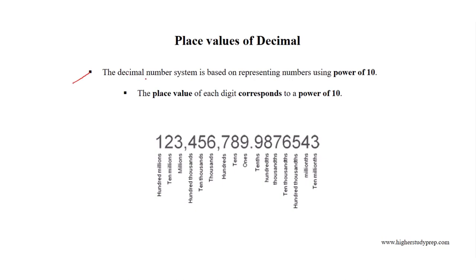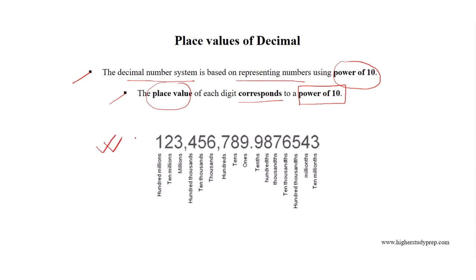The decimal number system is based on representing numbers using powers of 10, and the place value of each digit corresponds to a power of 10. For example, in this number, the place or digit immediately before the decimal point represents the place value ones.